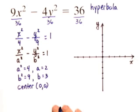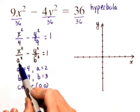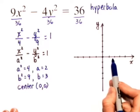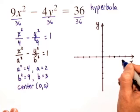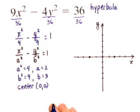Since a is equal to 2, we need to go 2 units to the right and 2 units to the left of the center along the x axis, because the x axis is the transverse axis. So 2 units to the right, that's our first vertex, and 2 units to the left, that's our second vertex.